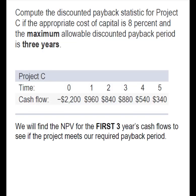So let's look at an example. We have a project with a cost of capital of 8%, and the firm has decided the maximum allowable discounted payback period is three years. In other words, they will give this project three years to cover the initial cash outflow of $2,200. To do this, we're simply going to find the net present value for the first three years' cash flows, and that's going to allow us to see if the project meets our required payback period. If we aren't paid back at the end of year three, our decision will be to reject the project, so there's no reason to calculate the NPV for years four and five.